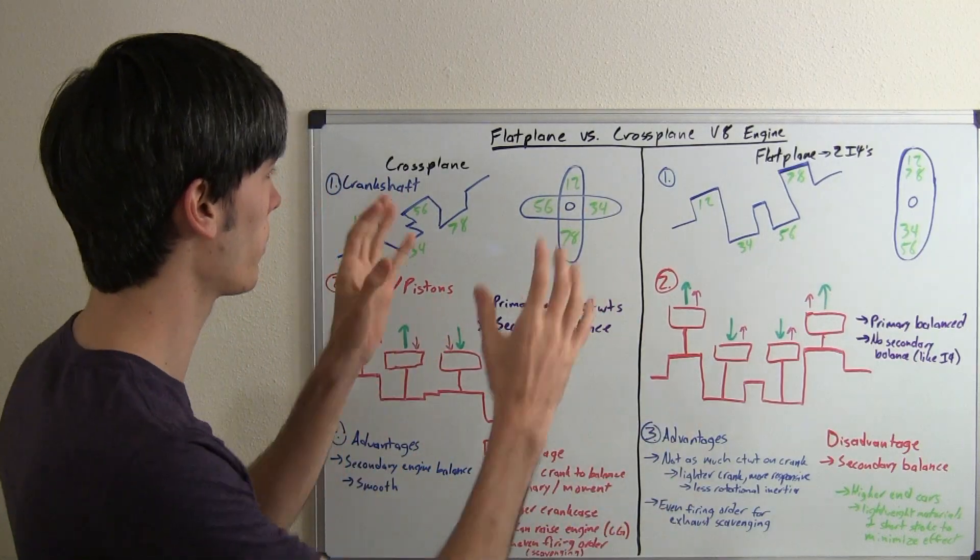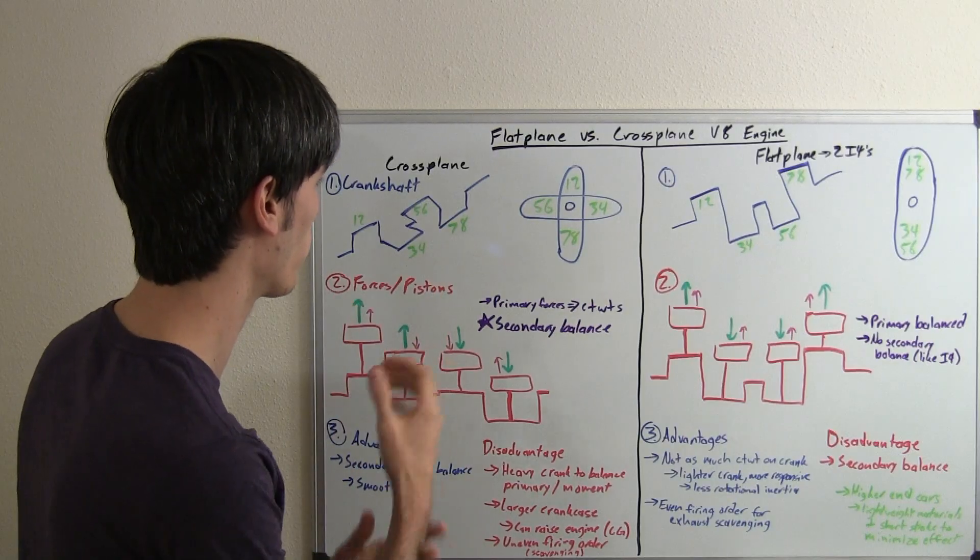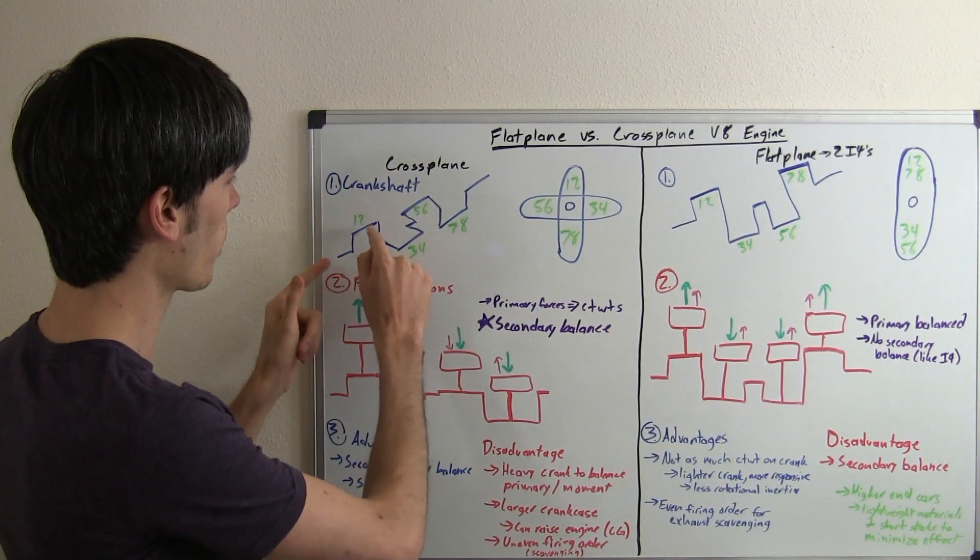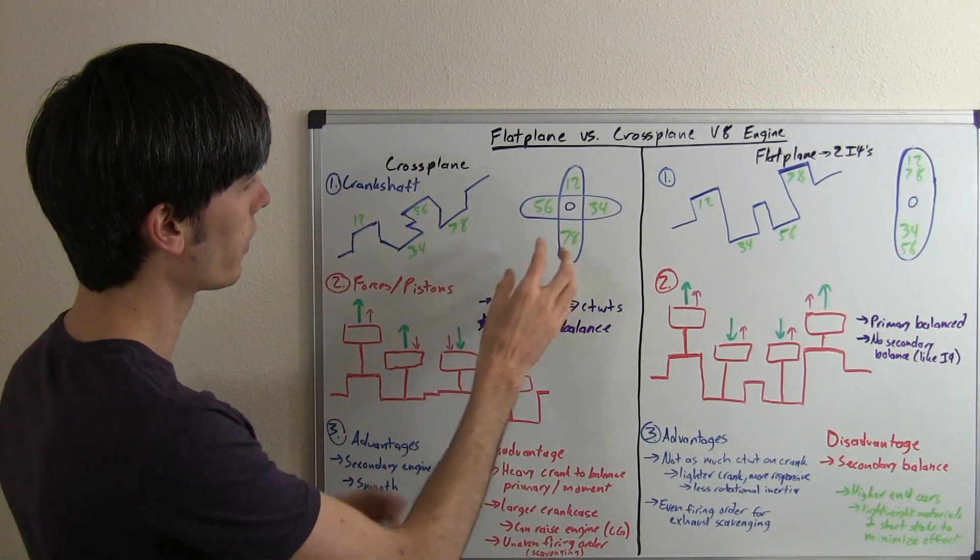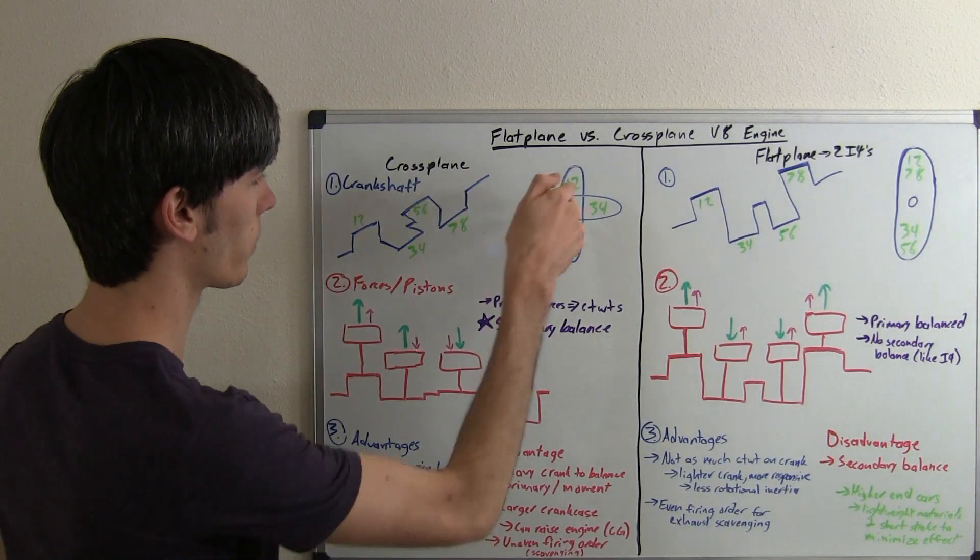So the way they get their name, flat-plane versus cross-plane, basically just has to do with the crankshaft and what it looks like. So with a cross-plane crankshaft, you can see the crankshaft that goes up here, out to the right, back over to the left, and then down. And so if you're looking at it from towards this crankshaft, if you're looking into it,